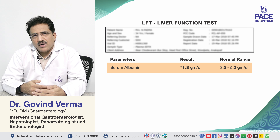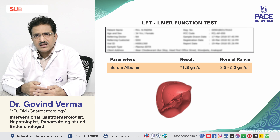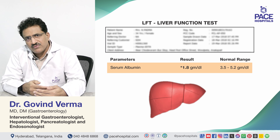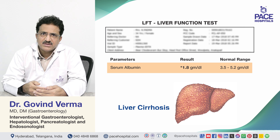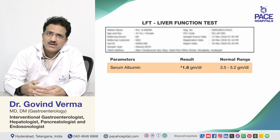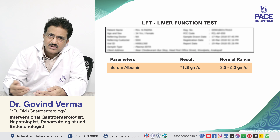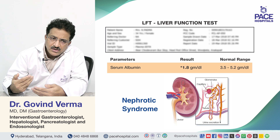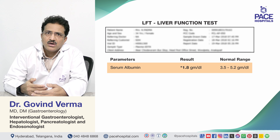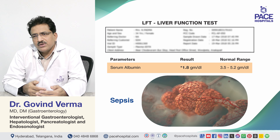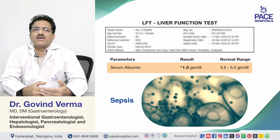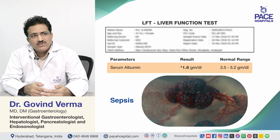If a patient has low albumin, it means the liver is not synthesizing albumin, indicating liver failure. The most common cause of low albumin in liver disease is cirrhosis. Other causes include protein-losing enteropathy (albumin loss through the gut), nephrotic syndrome (albumin lost through urine), and sepsis-induced capillary loss. Low albumin directly or indirectly speaks of liver synthetic function.